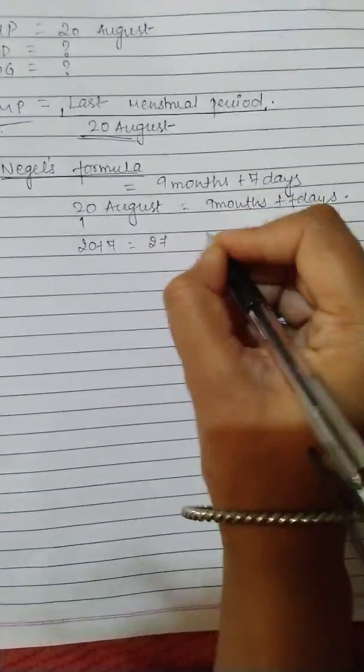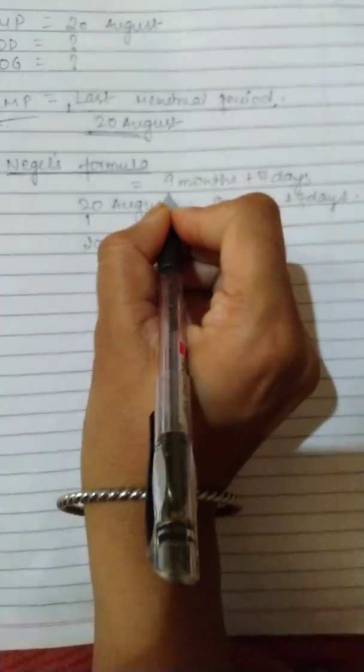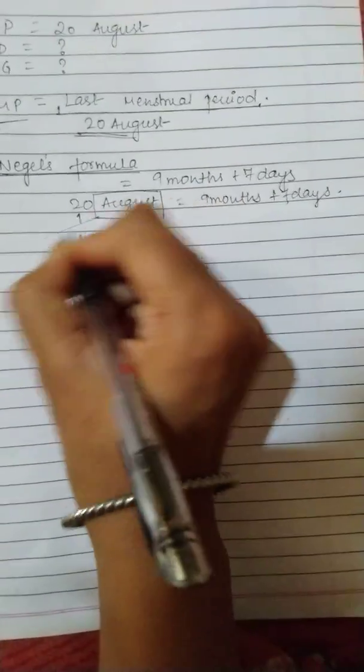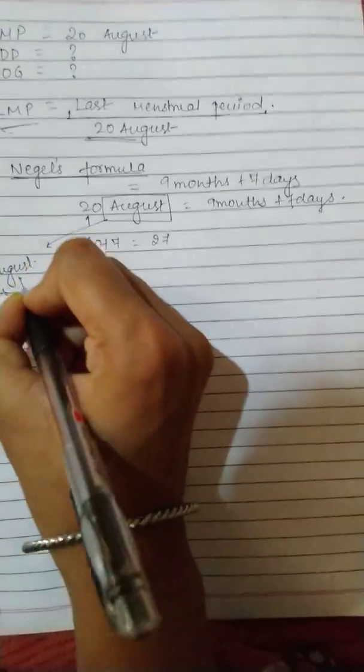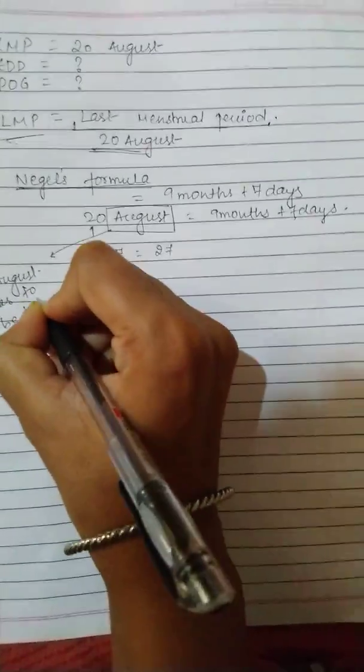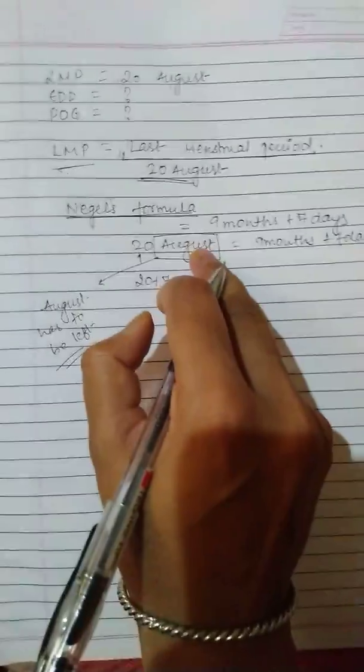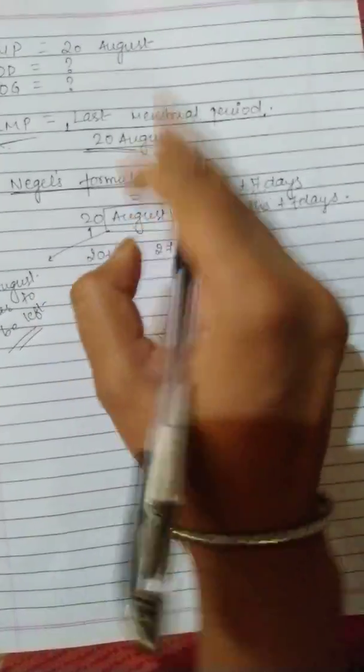will be 27. And nine months we will calculate, but we will leave this August. This August has to be left, this we will not take. So August ko chod ke,